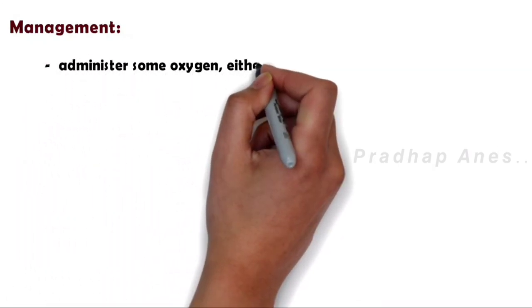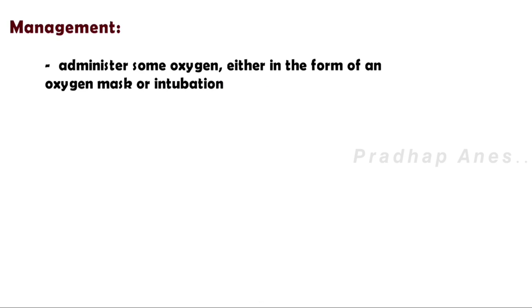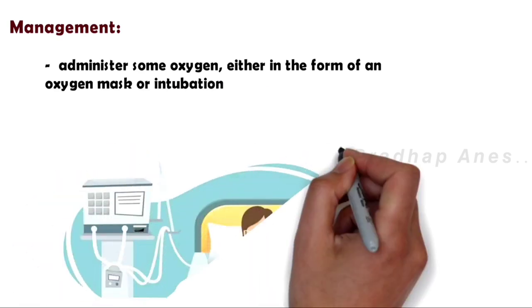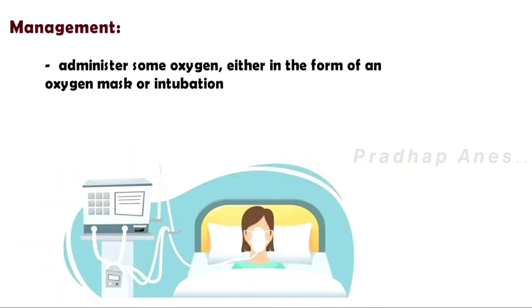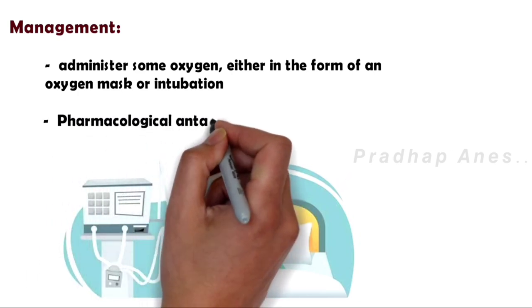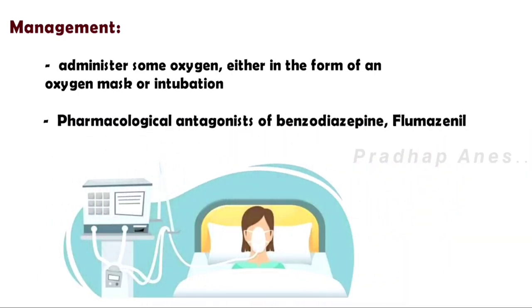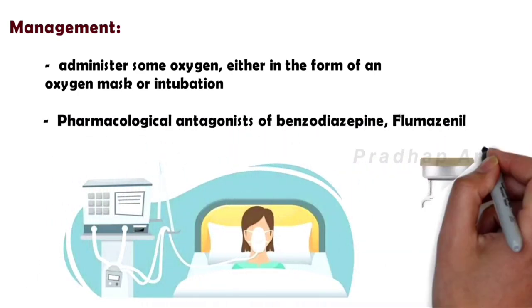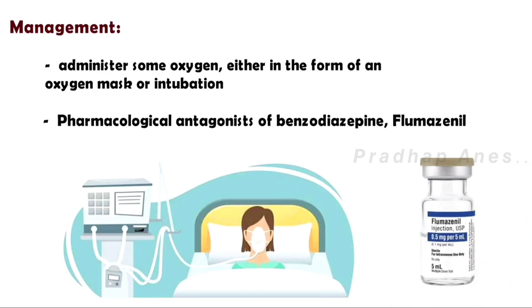Management: The first thing is we need to administer some oxygen either in the form of an oxygen mask or intubation. We can also use pharmacological antagonists of benzodiazepine, flumazenil. Flumazenil is a benzodiazepine antagonist that is used for the complete or partial reversal of the sedative effects caused by benzodiazepines in various clinical settings.